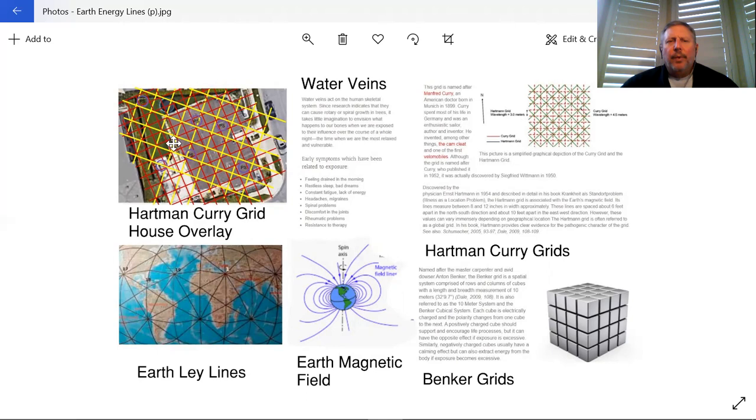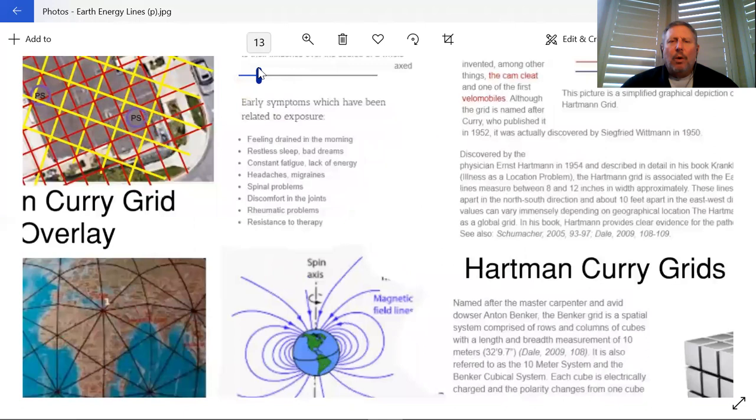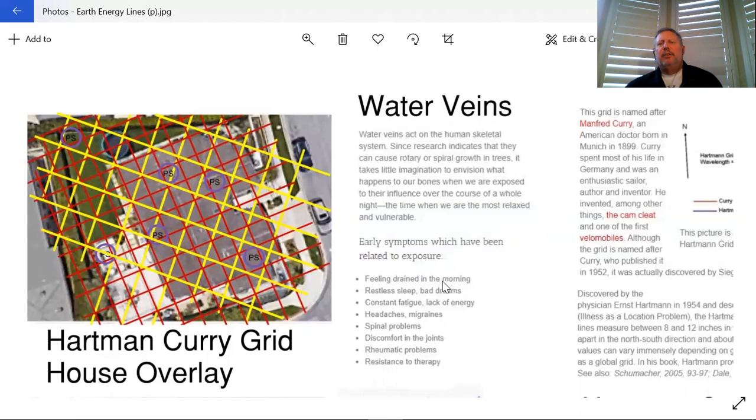The first one we're going to talk about, I think we might talk about water veins first. Water veins can have a very detrimental effect on the earth. This is when we have underground rivers.